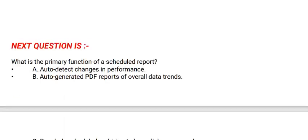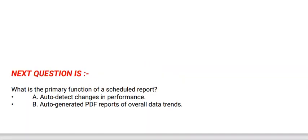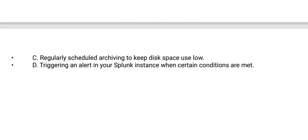Next question is: what is the primary function of a scheduled report? Options are: Option A: Auto detect change in performance. Option B: Auto-generated PDF reports of overall data trends. Option C: Regularly scheduled archiving to keep disk space use low. Option D: Triggering an alert in your Splunk instance when certain conditions are met. The correct option is Option D.